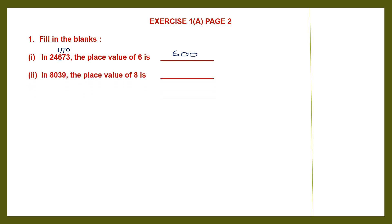Question 2: in the number 8,039, the place value of 8 is — so find out the position of 8 and we find out the place value. 8 is here, and this is 1s, 10s, 100s, and 1000s. So 8 is in the 1000s place. So 8 into 1000 is 8,000.